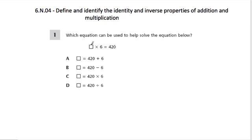Which equation can be used to help solve the equation below? What does that equation say? It says something—that's what this square is, it's a blank space—times, well, you could think of it as anything. In other words, what number goes into this space? So what number times 6 equals 420?